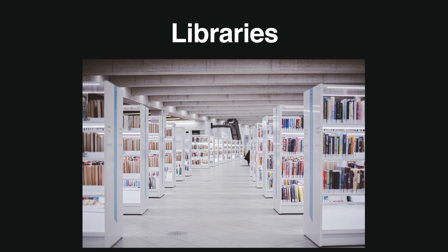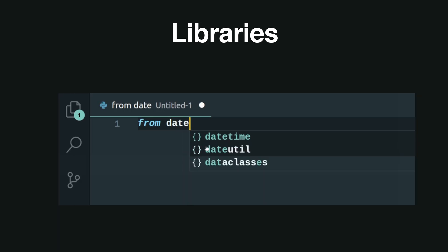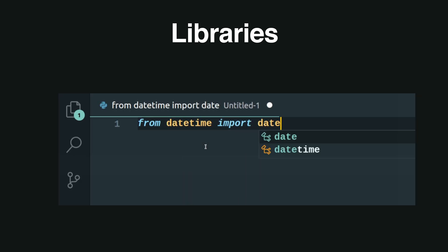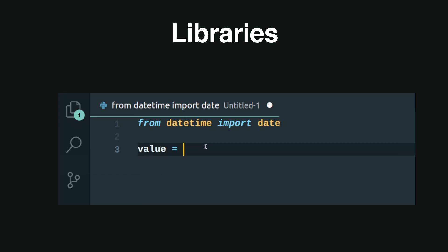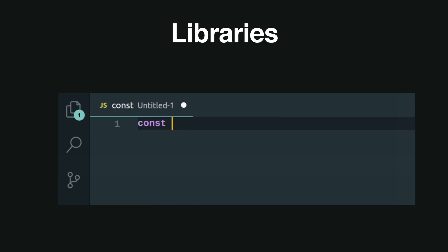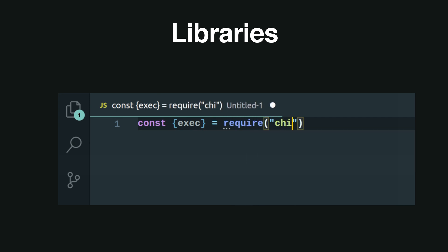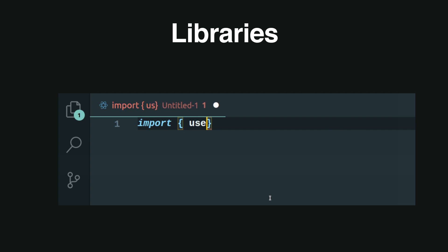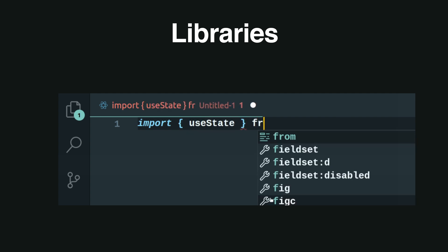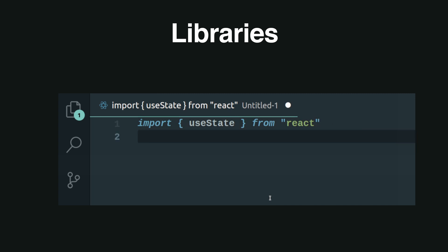As developers, we find ourselves using libraries all the time. In Python, for example, if you want to manipulate date and time, we import the datetime module and then access their internal methods, such as getting the current local date. Or in Node.js, if you want to execute a shell command from a .js file, we first need to import the child_process module, and then use exec to run a command. Similarly, if we want to use some logic provided by React, such as their hooks, we first need to import the library.